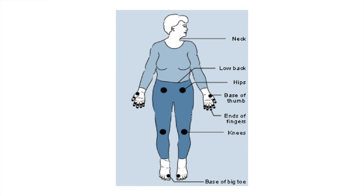Commonly affected joints in osteoarthritis include the neck, lower back, hips, base of the thumb, DIP and PIP joints of the hands, the knees — which are the most commonly affected joint overall — and the base of the big toe.